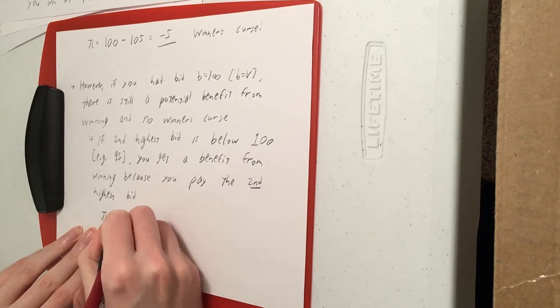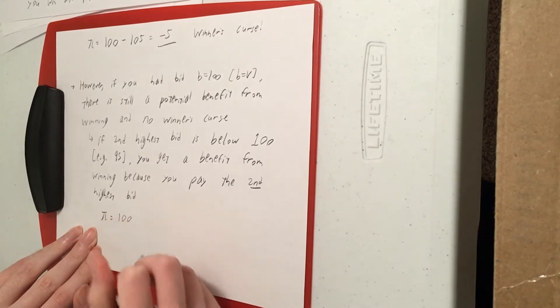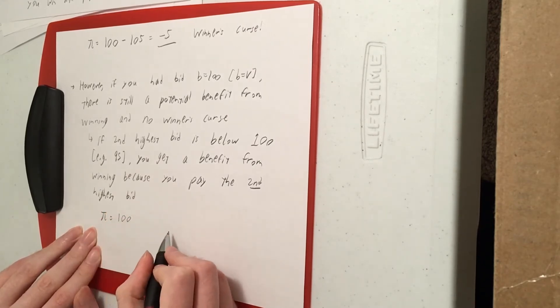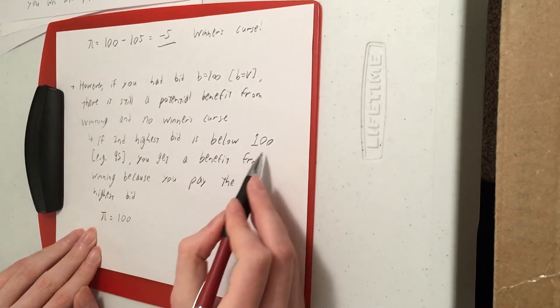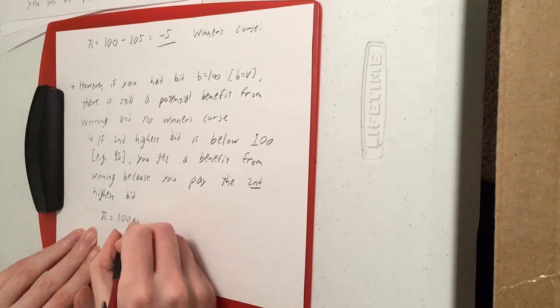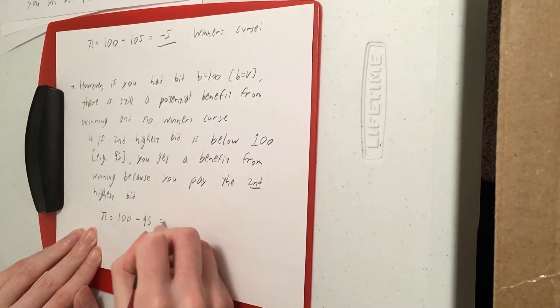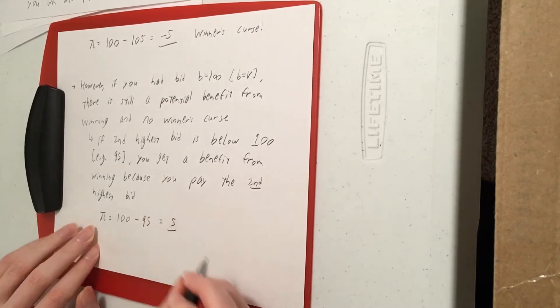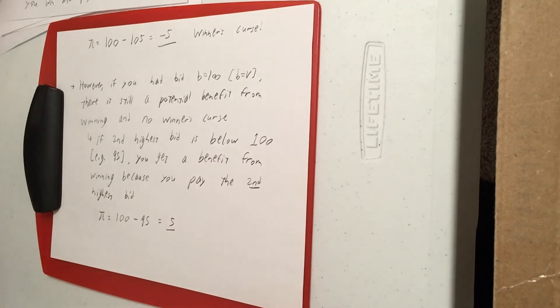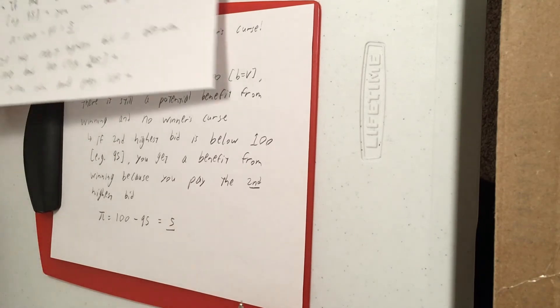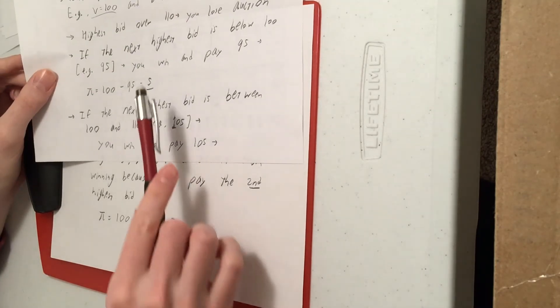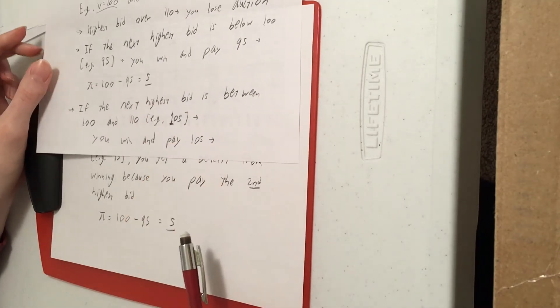You win the auction by bidding 100, and you pay that next highest bid of 95, so you still get that payoff of positive 5, just like you did before.